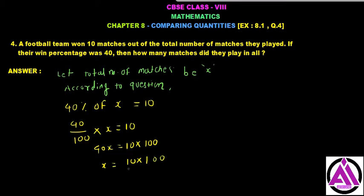Now we solve: 40/100 times x equals 10. Cross multiply to get 40x equals 1000. Divide both sides: x equals 100/4, which equals 25.